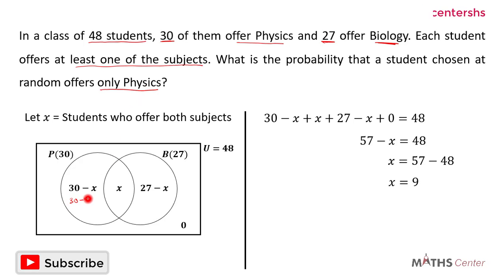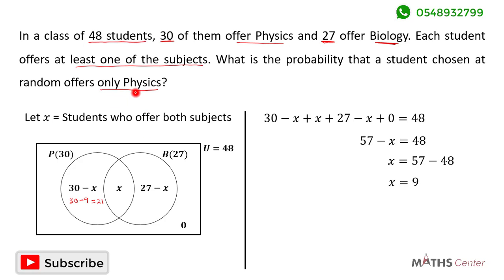If 9 students offer both subjects, then the number of students who offer physics only is equal to 30 minus 9, which gives us 21. So 21 students offer physics only.